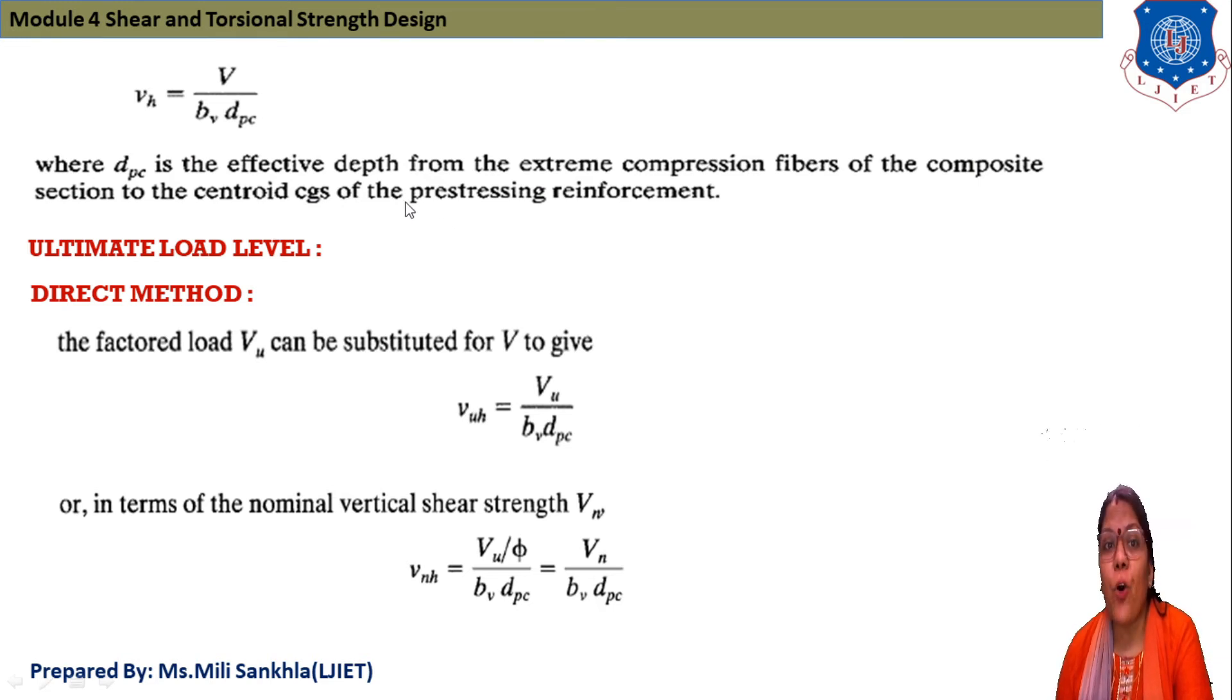According to ultimate load level method, first is our direct method to find horizontal shear strength of composite fibers. Factored load Vu can be substituted for V to give Vuh = Vu/(bv·dpc).